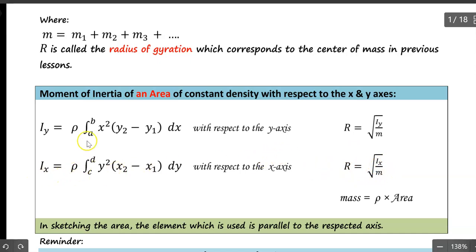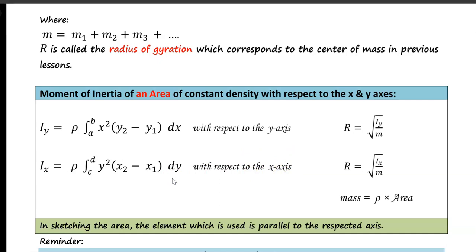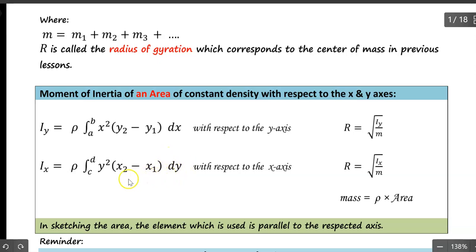Ix is the moment of inertia of an area of constant density with respect to the x-axis. With respect to the x-axis, you choose the element parallel to it — dy, the horizontal element. So your integrand will be defined in terms of y, and your upper and lower limits will be values of y.